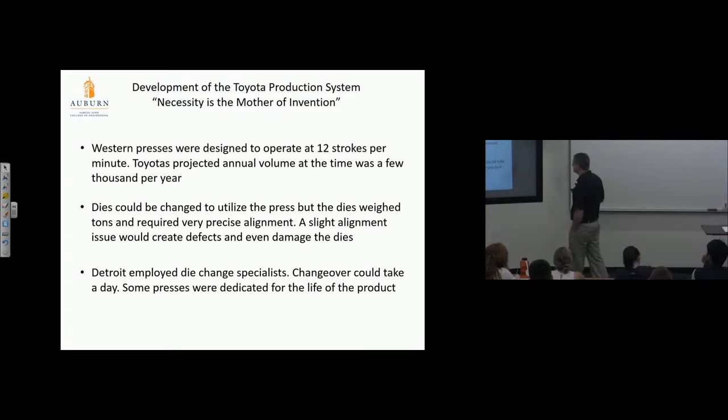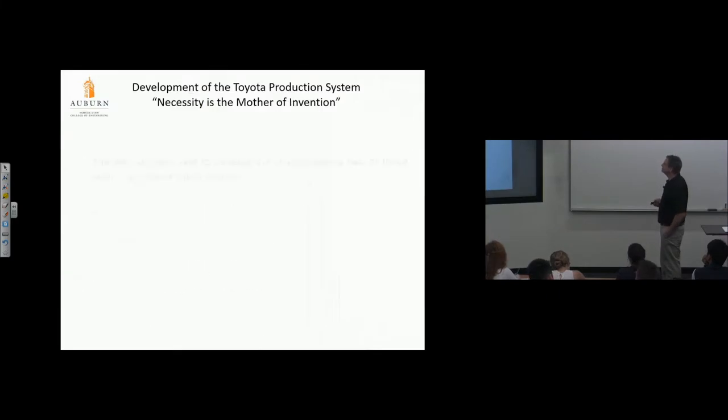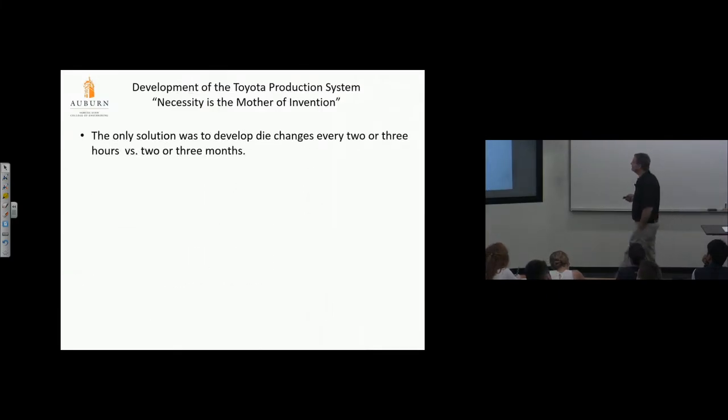Detroit employed die change specialists—changeover could take a day. Some presses were dedicated for the life of the product. Toyota couldn't survive that. Their initial market required multitudes of different vehicles, and they only had a handful of presses. They had to change over rapidly to satisfy their market and build volume. The only solution was to develop die changes every two or three hours versus two or three months, and eventually that became two or three minutes—under 10 minutes, single minute exchange of die.